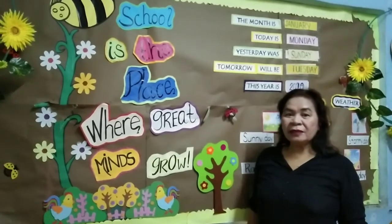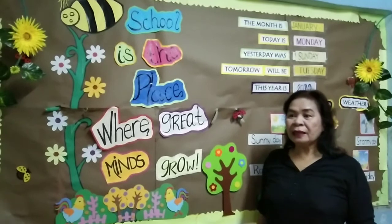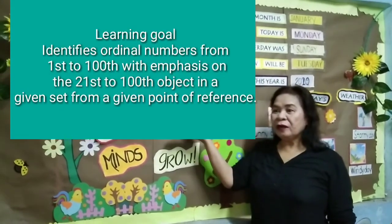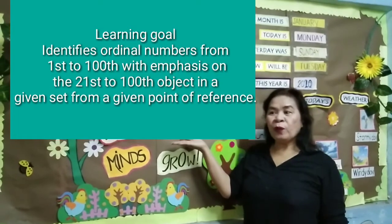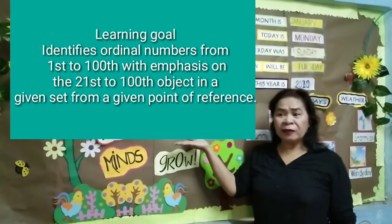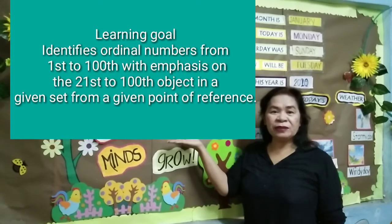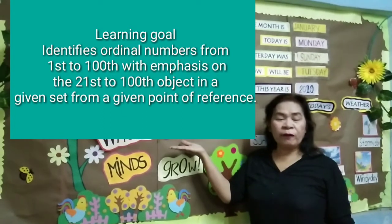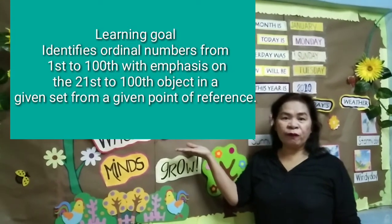Okay, so our learning goal is identifies ordinal numbers from 1st to 100th with emphasis on the 21st to 100th object and a given set from a given point of preference.